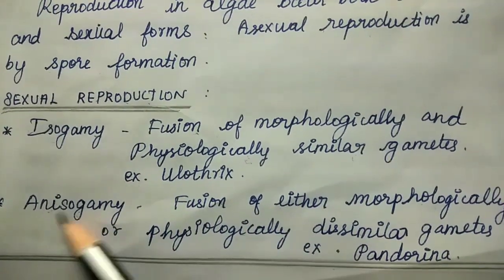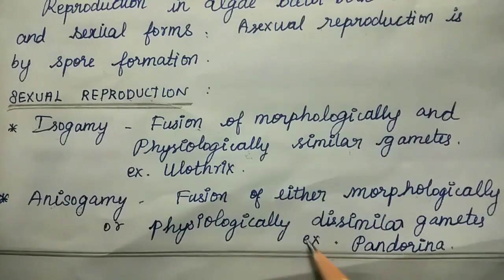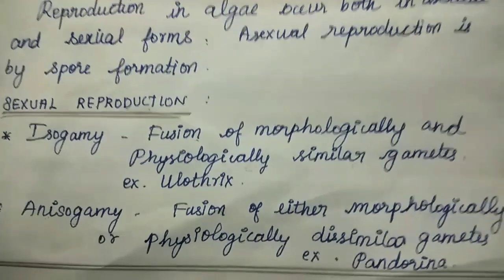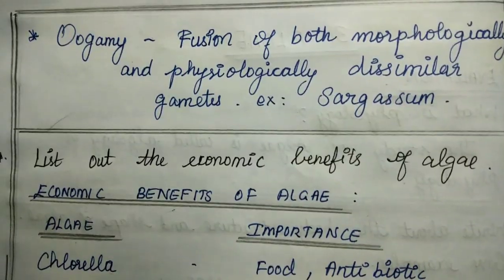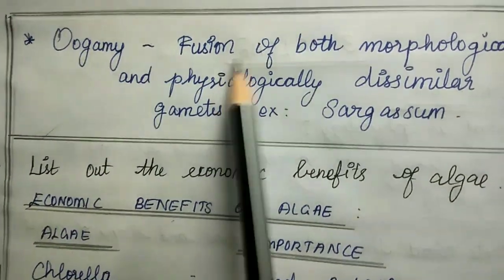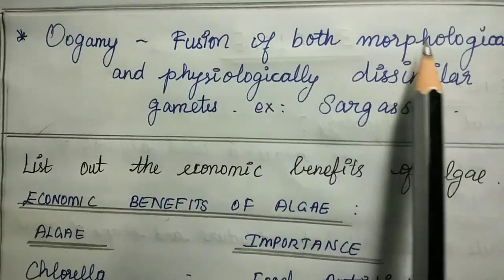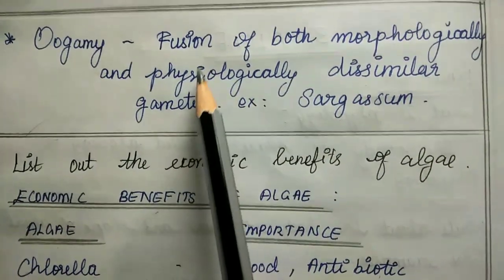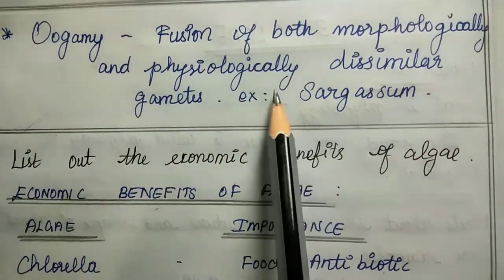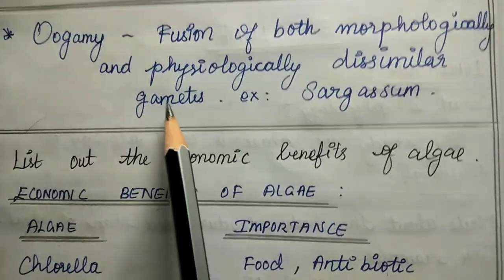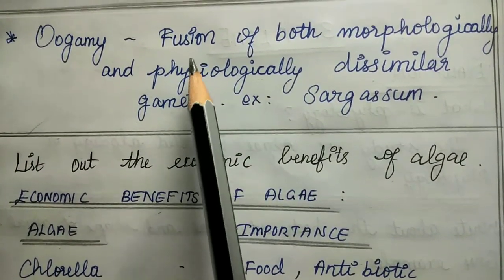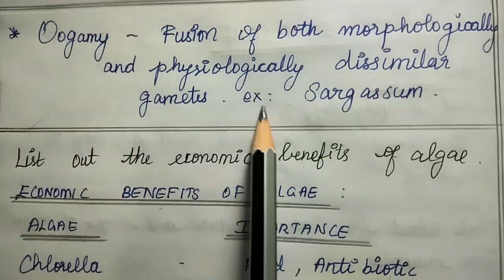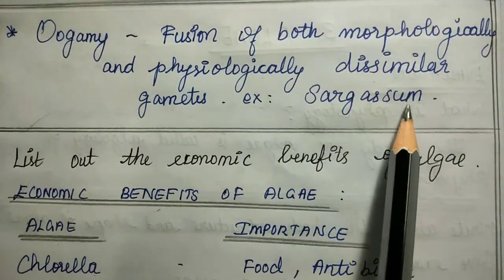Anisogamy is where gametes are morphologically and physiologically dissimilar in some way. Example is Pandorina. Next is Oogamy, which is the fusion of both morphologically and physiologically dissimilar gametes. Example is Sargassum.